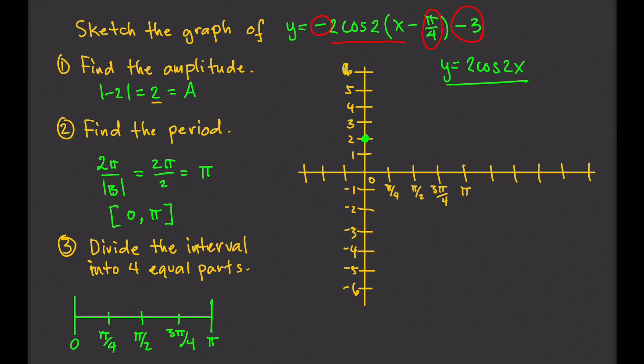Pi over 4 gives us the next point at the middle. Pi over 2 gives us the lowest point. 3 pi over 4 brings us back to the center. And then pi brings us back to the top. Connecting those points gives us one period of y equals 2 cosine 2x.